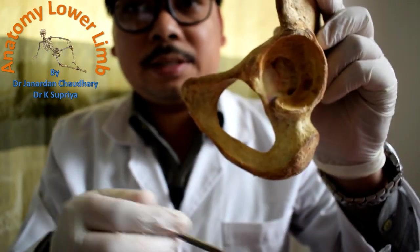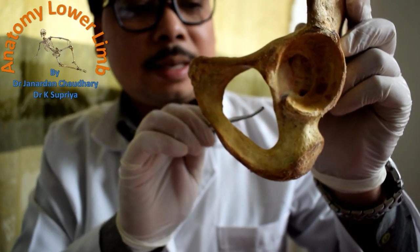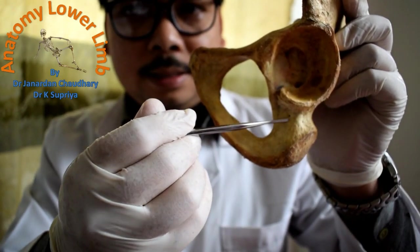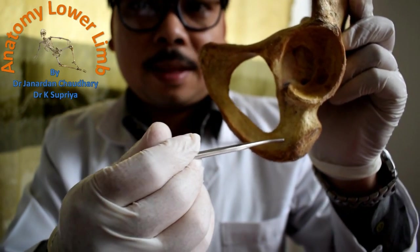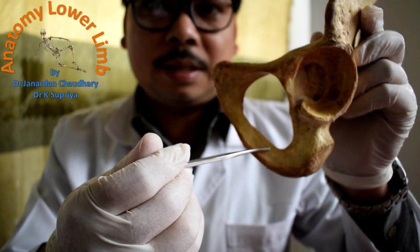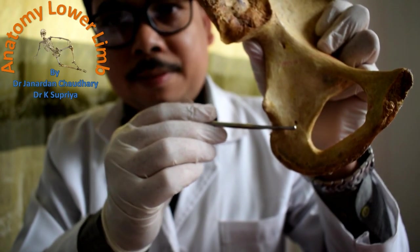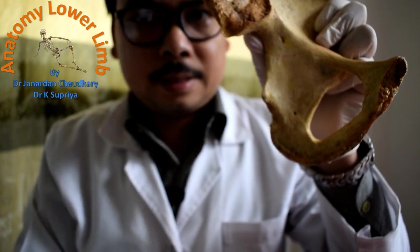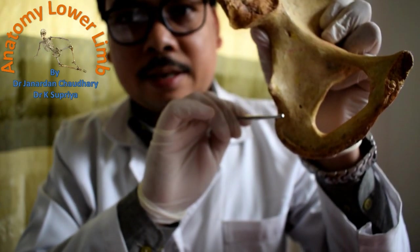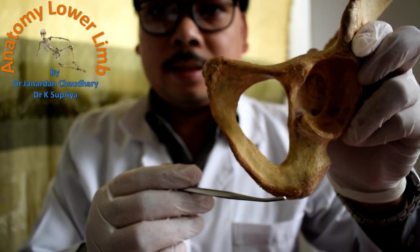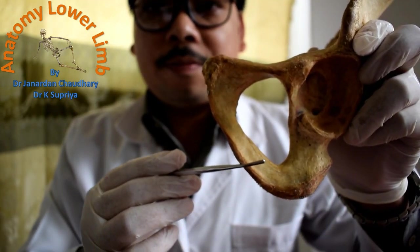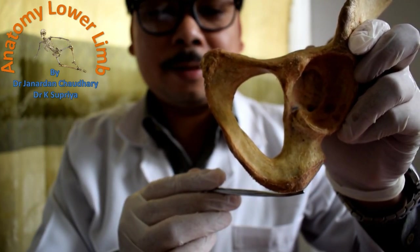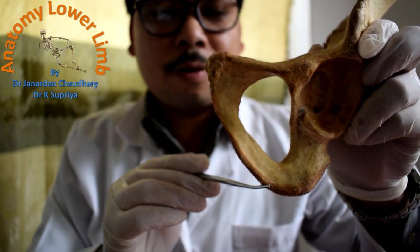The posterior surface of the ischium is continuous with the gluteal surface of the ilium. The femoral surface of the ischium lies between the anterior border and the lateral border, and continues with the outer surface of the ramus of the ischium. The pelvic surface lies between the anterior border and the posterior border of the ischium.